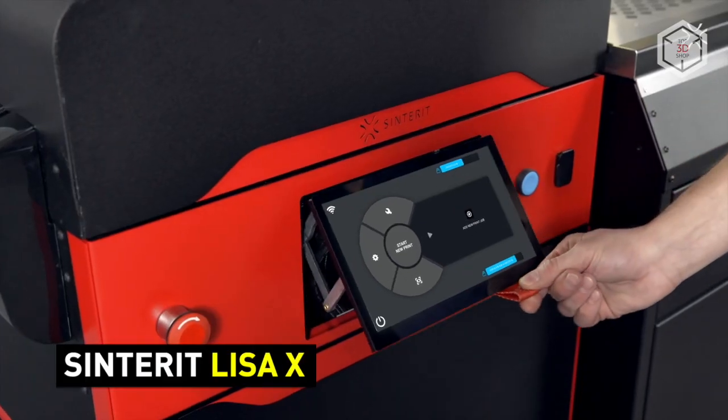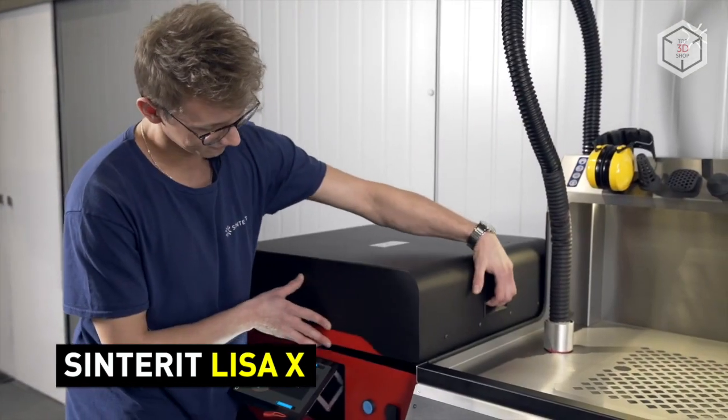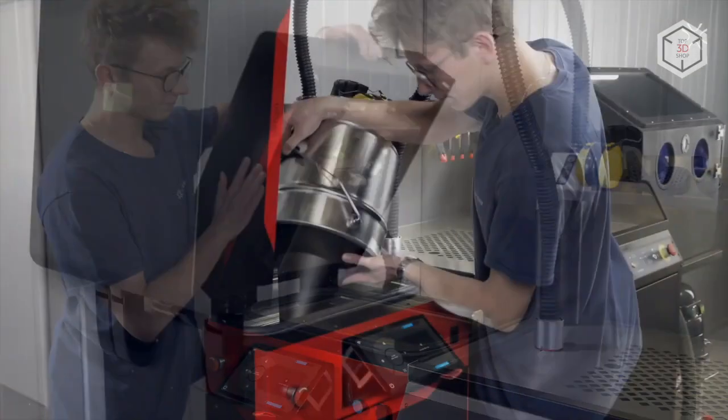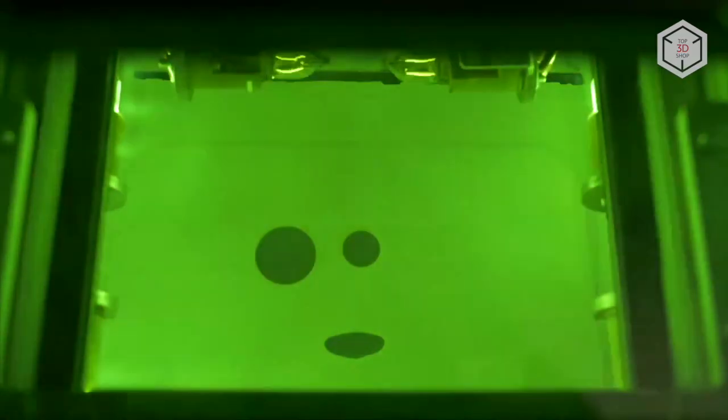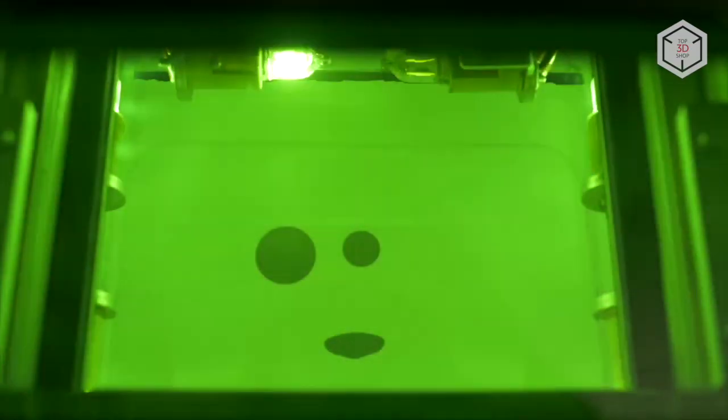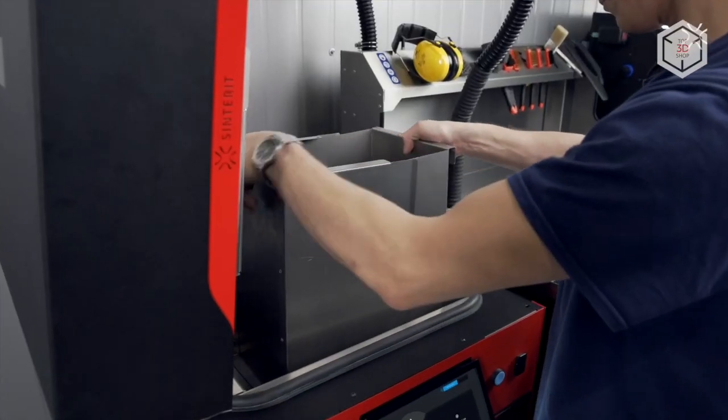The Sintoret Lisa X is the newest and most powerful model in the company's lineup of compact SLS printers. Compared to its predecessors the Lisa X features a larger build volume of 130 by 180 by 330 millimeters and a much higher print speed of up to 14 millimeters per hour. This makes the Lisa X a professional 3D printer suitable for a wide scope of industrial tasks like prototyping and use parts production and many others.